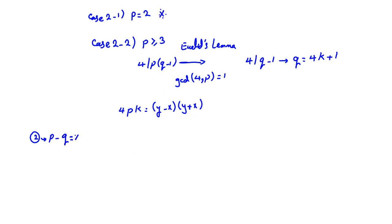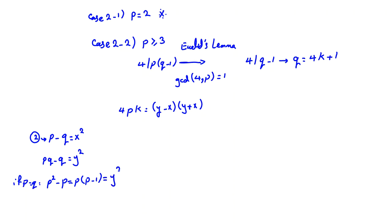From the problem, P minus Q equals X squared and PQ minus Q equals Y squared. Also, P cannot equal Q: if P equals Q, then PQ minus Q equals P(P minus 1) equals Y squared. Since P and P minus 1 are consecutive and relatively prime, both must be perfect squares. But P is prime, so it cannot be a perfect square — contradiction. Therefore P is strictly greater than Q.